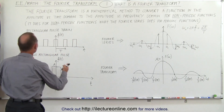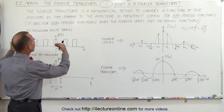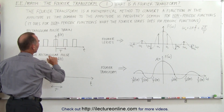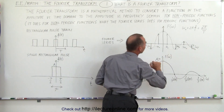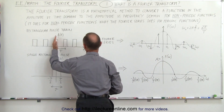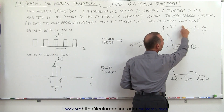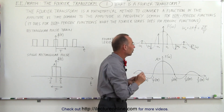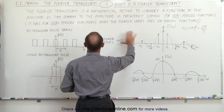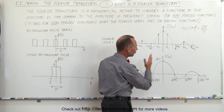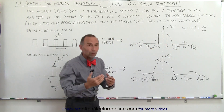For example, we have a rectangular pulse train, which is a periodic function. Notice that it's centered about the vertical axis, and then we take the Fourier series of that. This is the period, this is the amplitude in the time domain. We do a Fourier series and we get the amplitude in the frequency domain, and notice that we get something that looks like a sync function. We're going to use omega sub-naught here because we have discrete frequency values — those discrete frequency values are where we find amplitudes for the Fourier series.